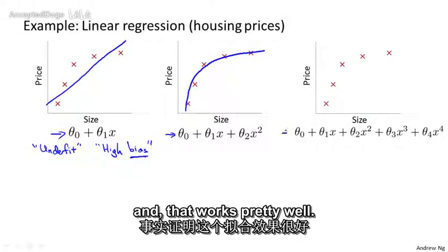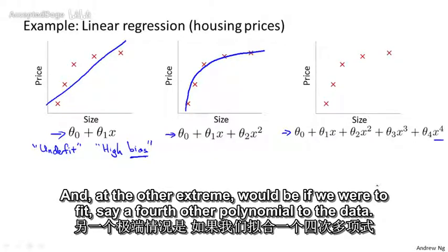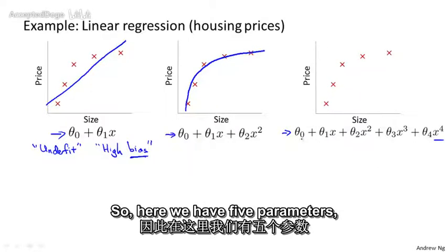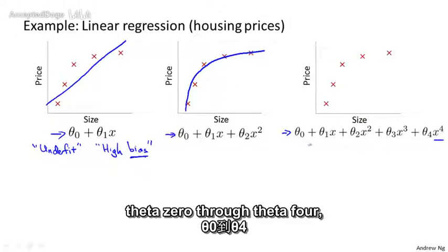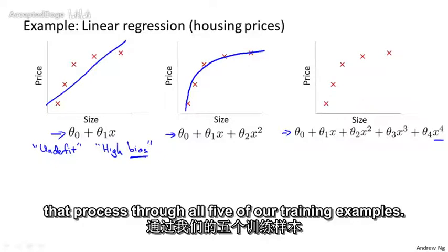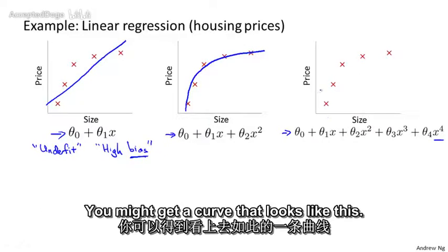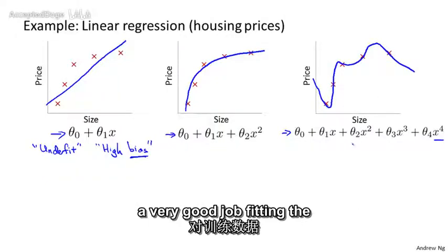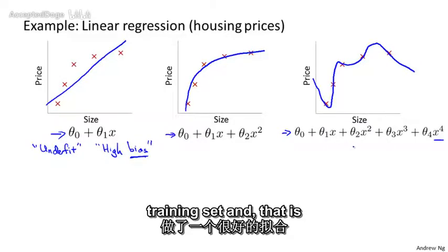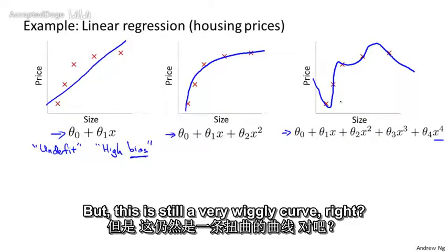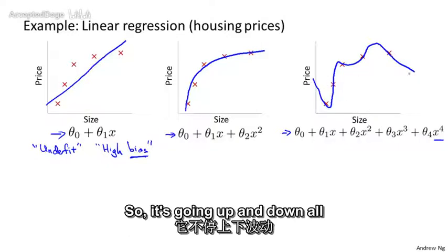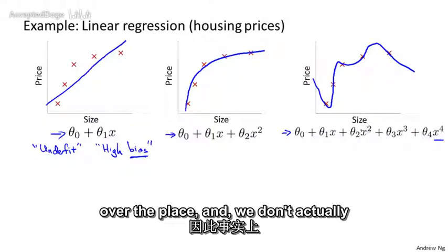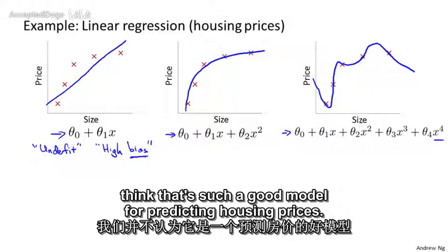And at the other extreme would be if we were to fit, say, a fourth order polynomial to the data. So here we have five parameters θ₀ through θ₄, and with that, we can actually fit a curve that passes through all five of our training examples. We might get a curve that looks like this, that on the one hand seems to do a very good job fitting the training set, and it passes through all of my data at least, but this is a very wiggly curve, right? Going up and down all over the place, and we don't actually think that's such a good model for predicting housing prices.